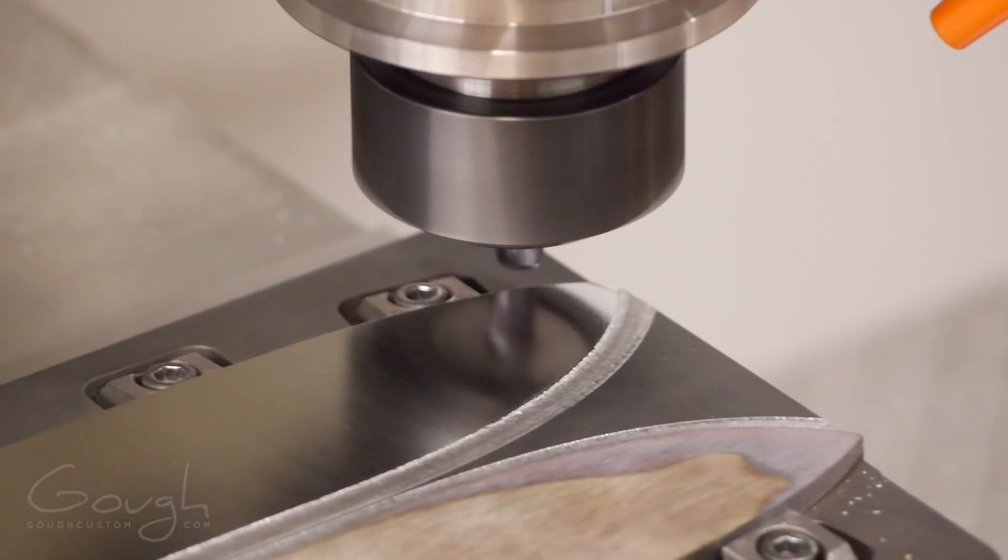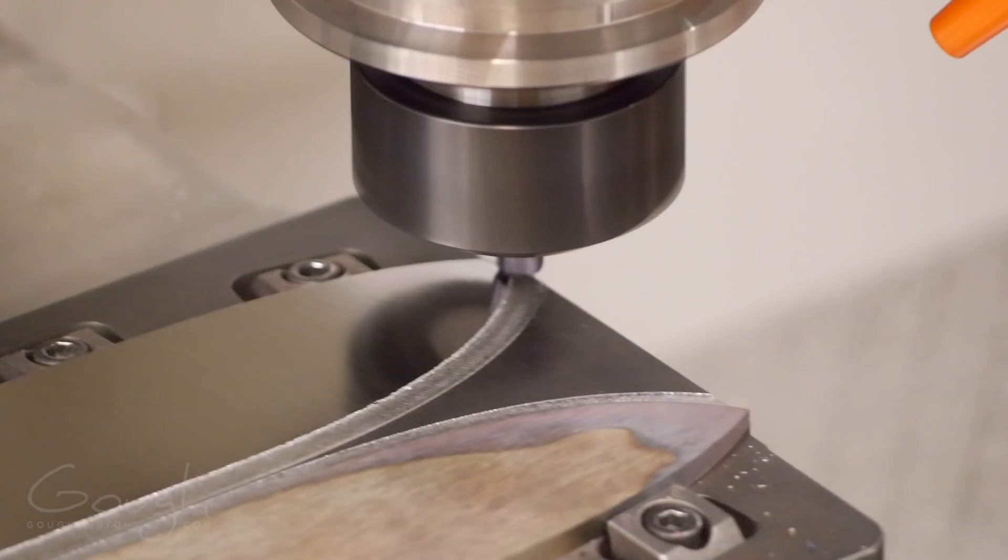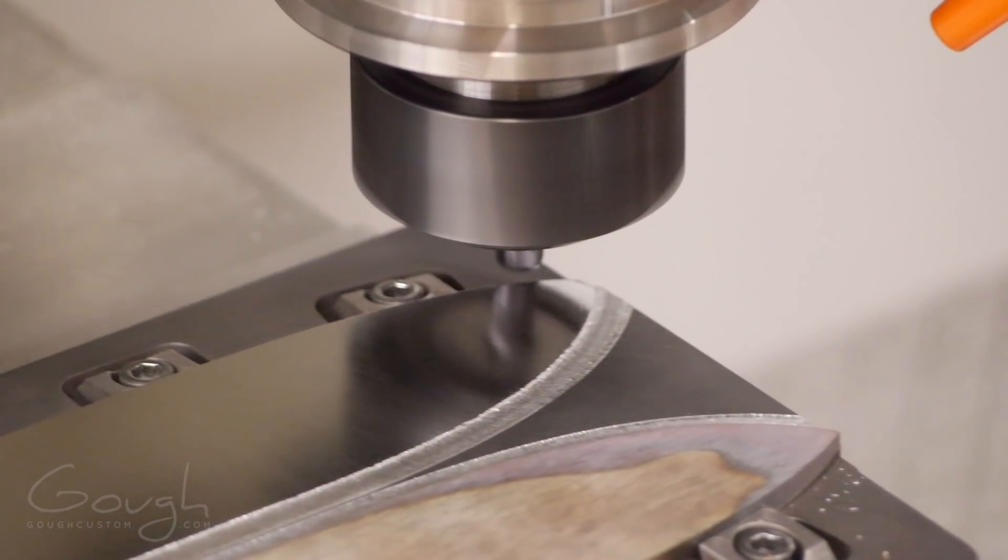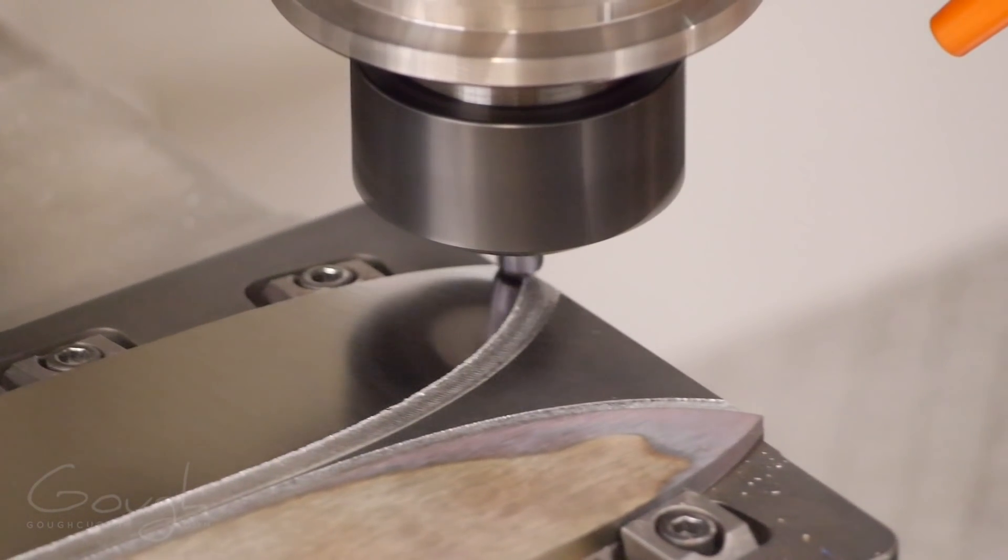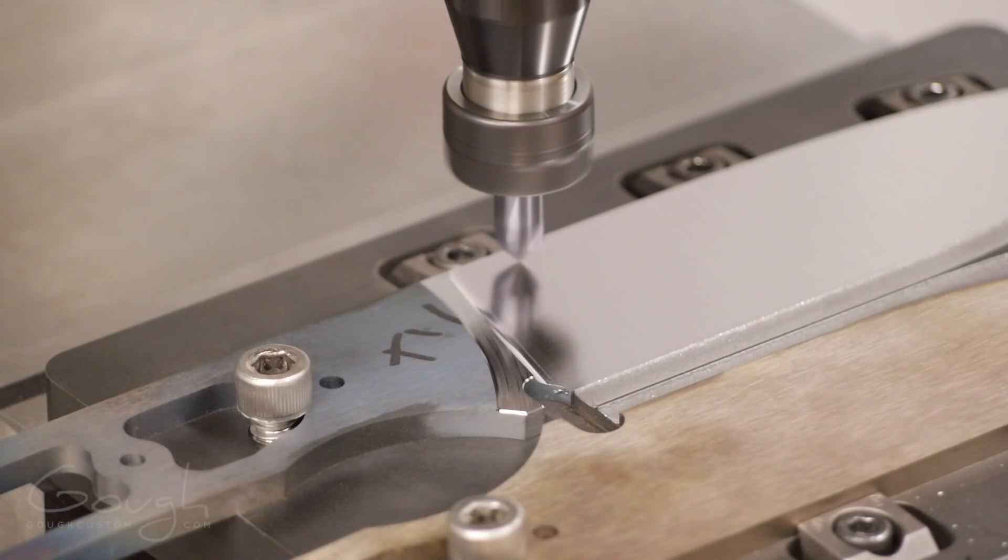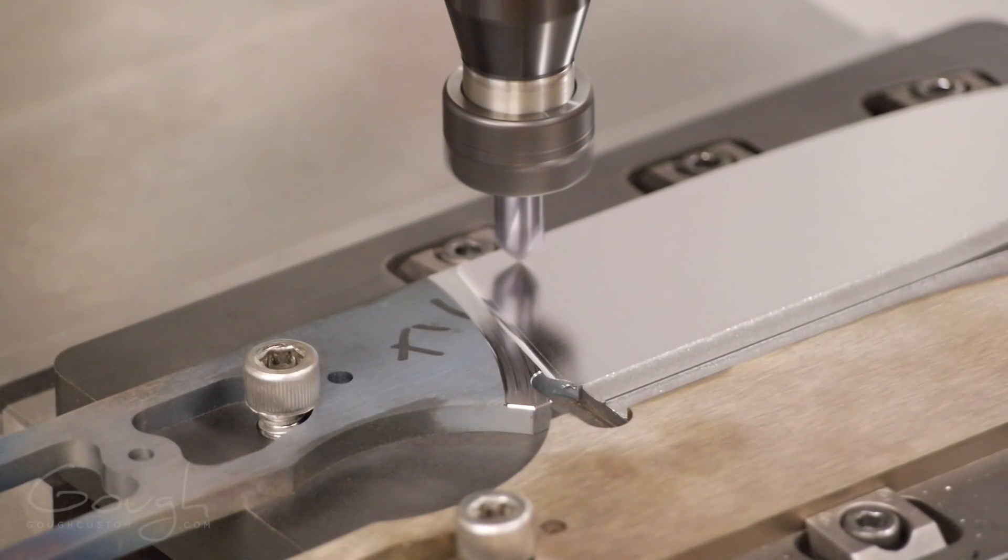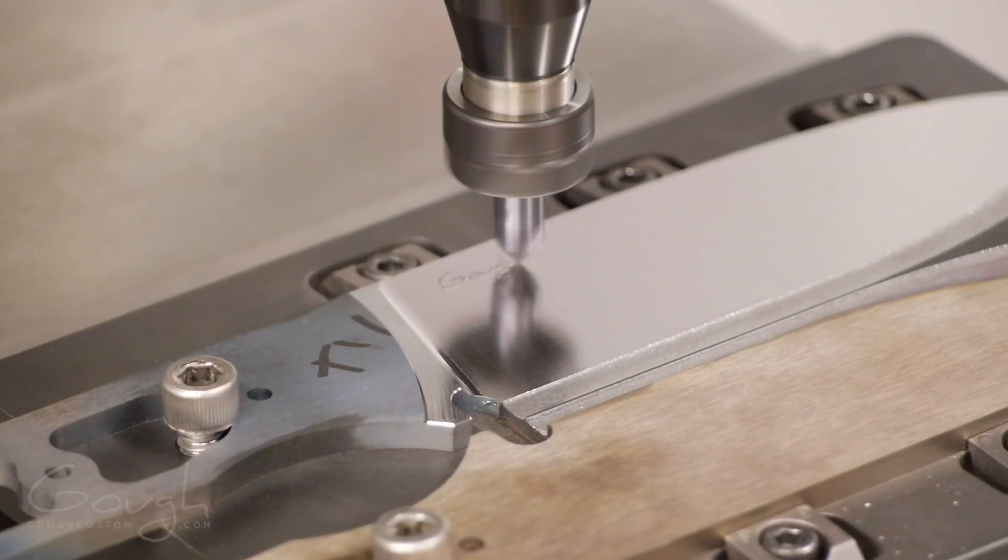As you can see the surface finish that you can get when hard milling is just vastly better than what you can do when you're machining annealed steel. The final step in hard milling for this blade is to come in with a chamfer mill and engrave my logo.